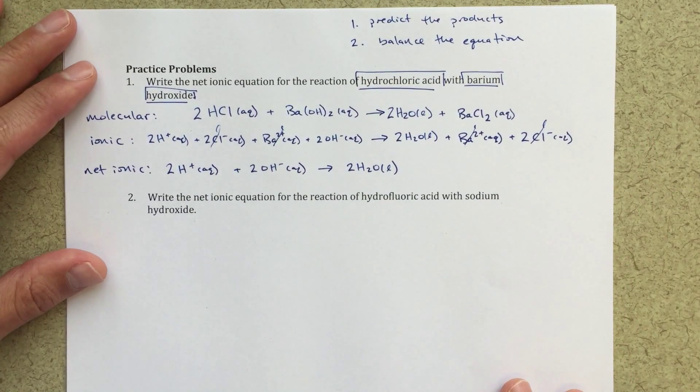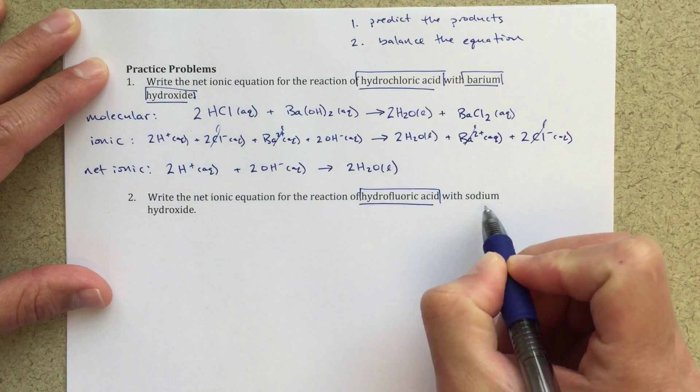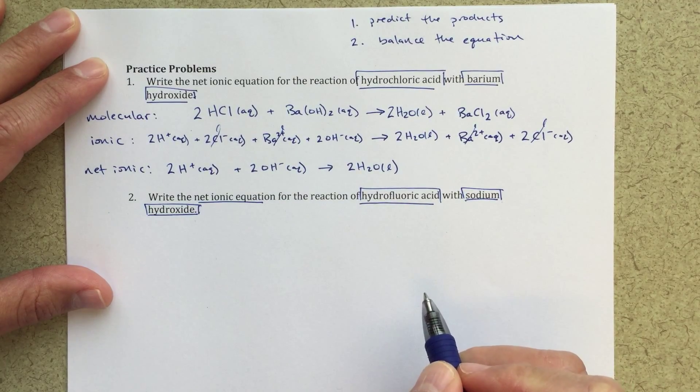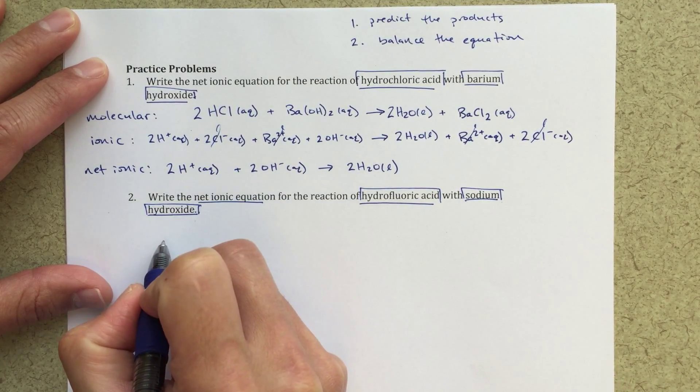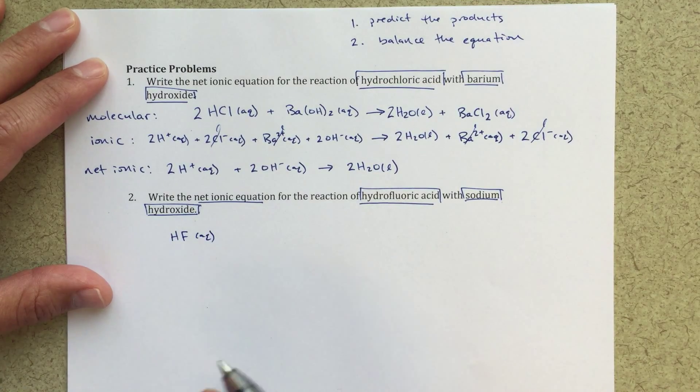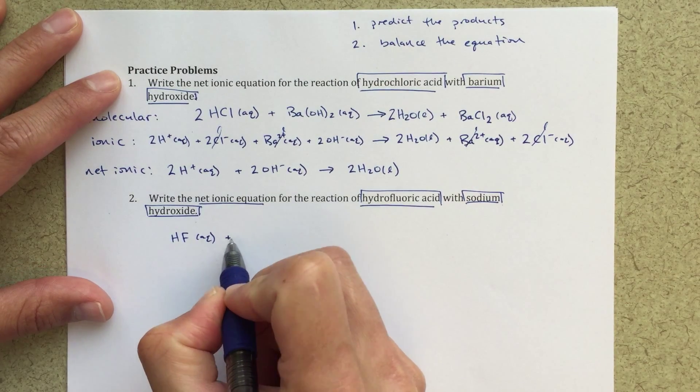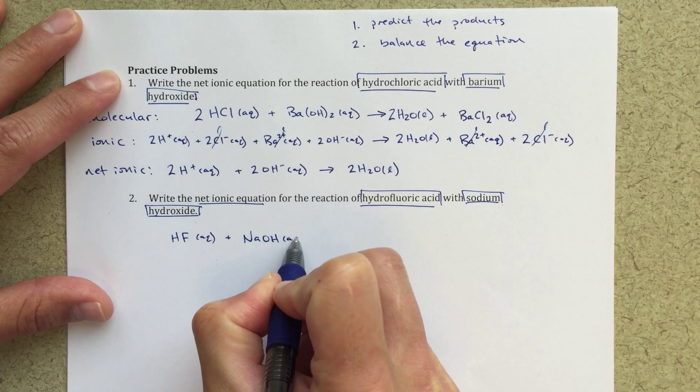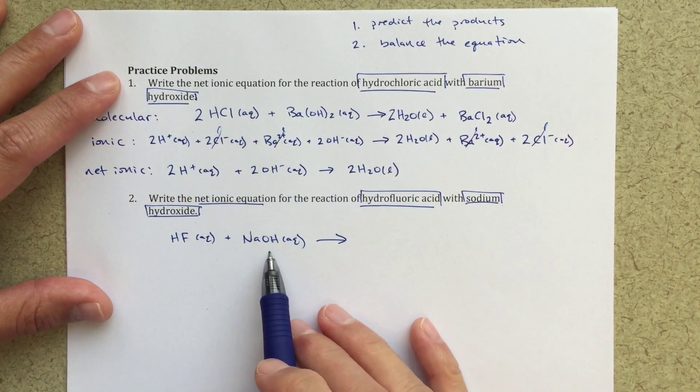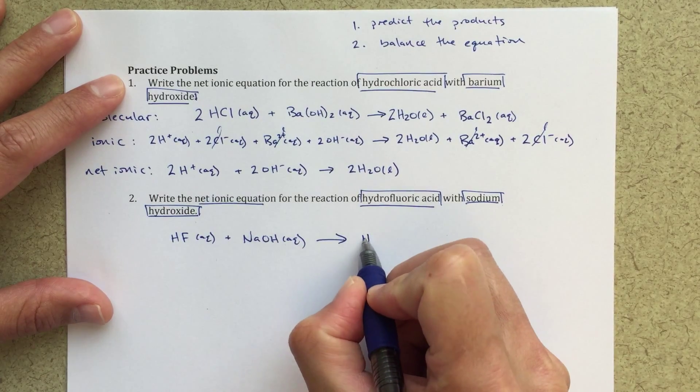Let's do the next one. The next one, I'm using hydrofluoric acid with sodium hydroxide, and again I'm looking for that net ionic equation. So I know hydrofluoric acid is HF. I'm gonna write aqueous because we're gonna be doing this in water solution chemistry. Plus NaOH aqueous.